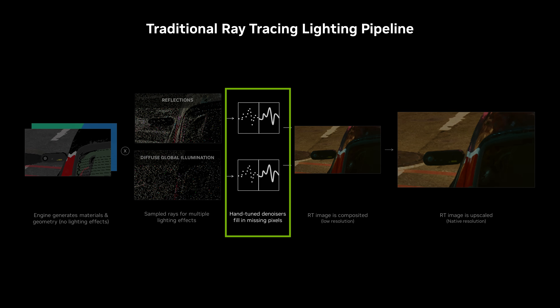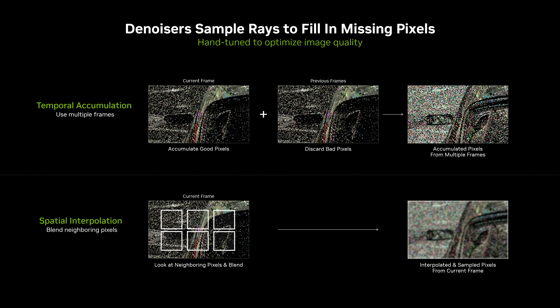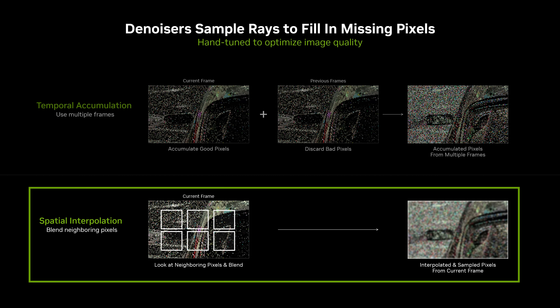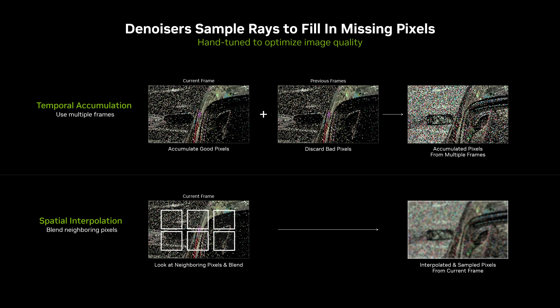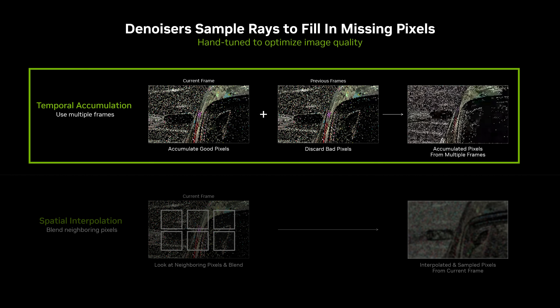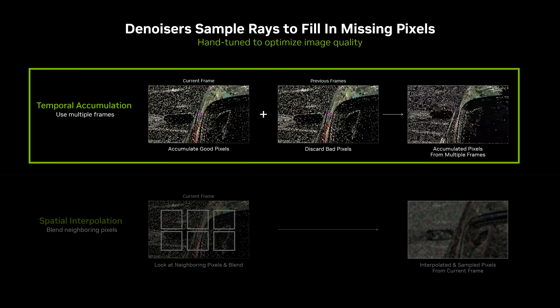Even offline ray tracers have to deal with this problem, and we do this by using denoisers. There are multiple kinds of denoisers for every frame that are combining information across pixels in the frame by blending them together, and across multiple frames by accumulating information in order to come up with our best estimate of how the scene looks.